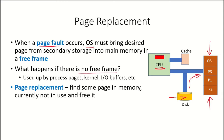But what happens if there is no free frame? All the frames might be used either by the operating system or the kernel, or by various processes or input-output buffers. If all the frames are currently occupied and a new page is being brought from secondary storage to main memory, where will it be kept? In this case, we need a page replacement.